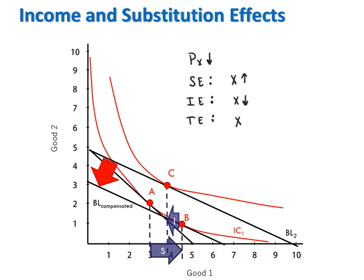On the other hand, when x is an inferior good, when the price of x decreases, the substitution effect will pull x up, because the relative price of x in terms of y has decreased, while the income effect will pull x down, because purchasing power has gone up and consumption of inferior goods thus goes down in the income effect. So the substitution and income effects pull x in opposite directions, giving us an ambiguous total effect.